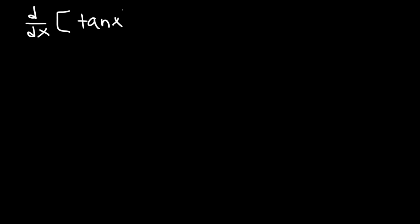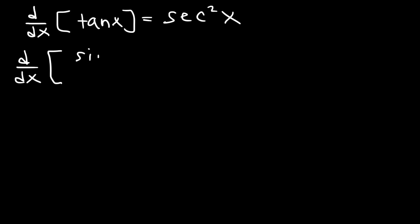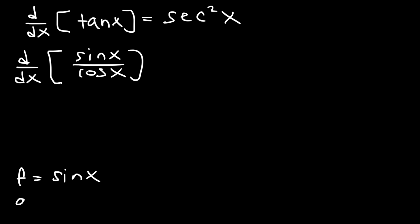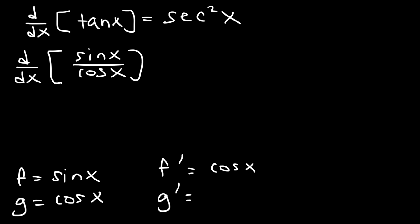The derivative of tangent x is equal to secant squared. Use the quotient rule to prove this. Tangent is sine divided by cosine, so we have a fraction. f is sine x and g is cosine x. f prime — the derivative of sine — is cosine. And the derivative of cosine x is negative sine.